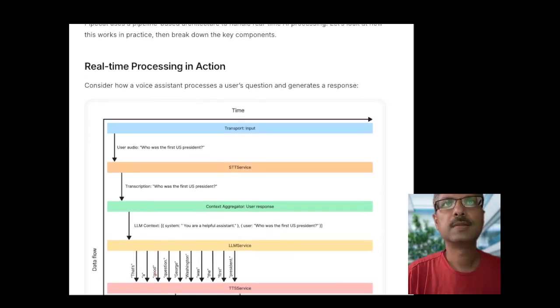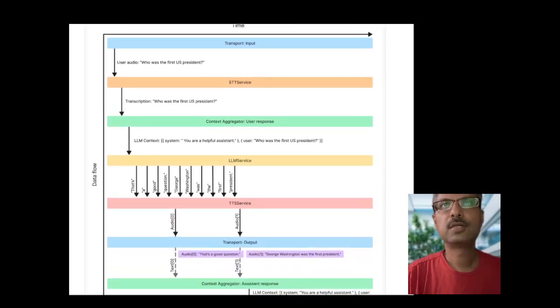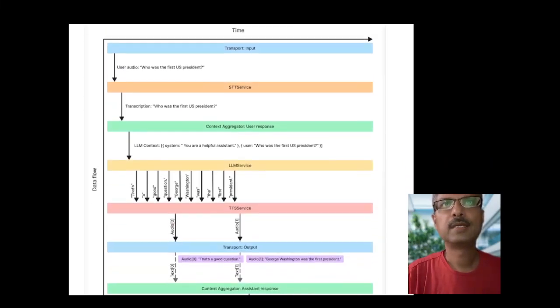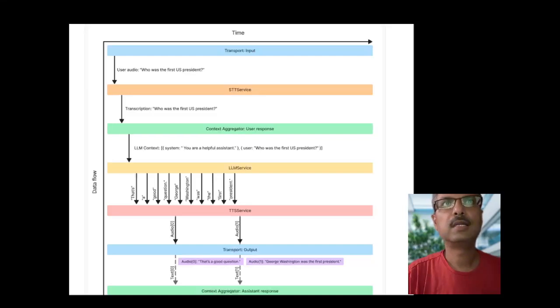Essentially, this diagram shows you the pipeline in a single diagram. What happens here is that transport input your microphone, you just say something like 'who was the first US president,' it goes to STT service, speech to text service, which transcribes into text and gets aggregated into LLM context. This format, which is system or user roles, that goes to LLM service.